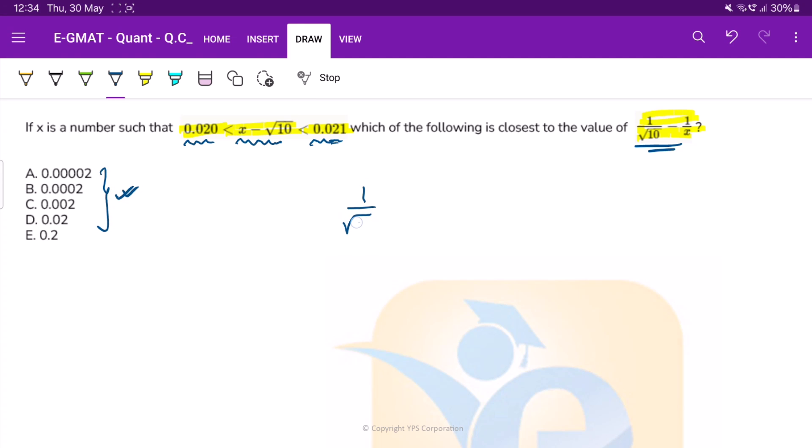Alright, 1 by under root 10 minus 1 by x. This is our expression. If we simplify it further, x minus root 10 by x under root 10. So this you would notice is a number that is here.